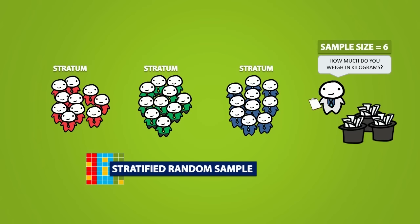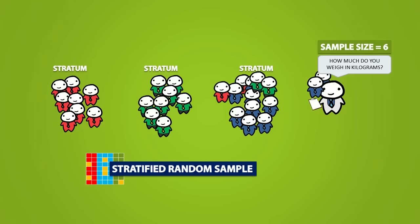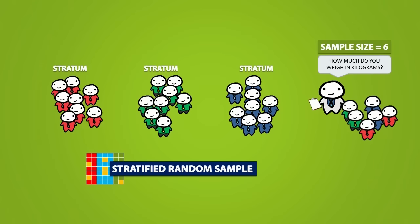For example, we could take an SRS of 2 people from each group, so that we get the total of 6 people. A stratified random sample is good for making sure that whoever is administering the sample gets in contact with each kind of group.